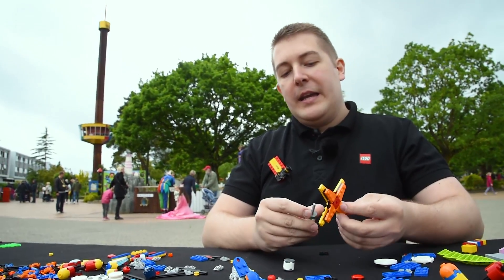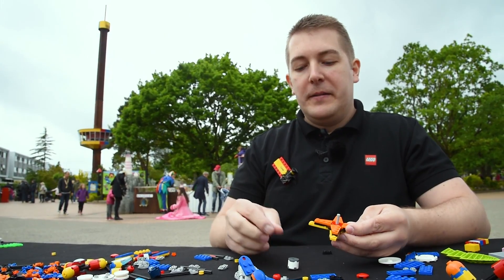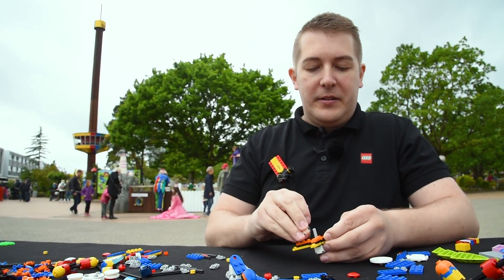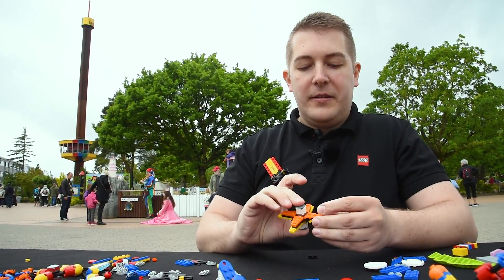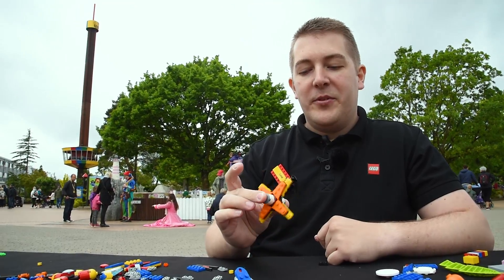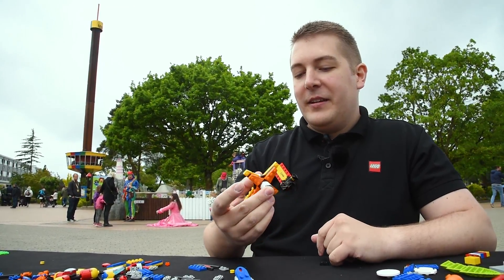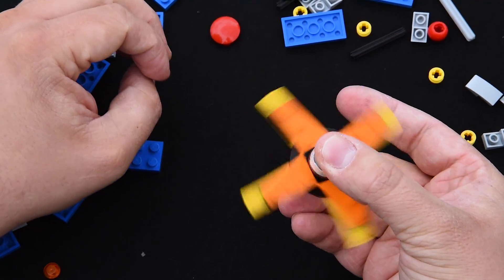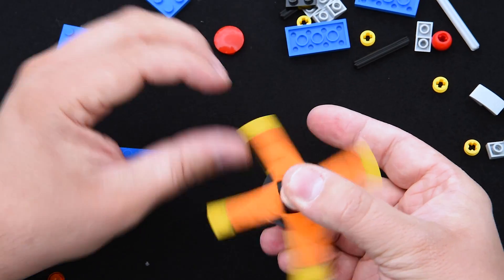And then we put that in the bottom of our fidget spinner here and the top one just goes on like this and you can spin on this. It's super easy to do, this is our Lego fidget spinner, try it out.